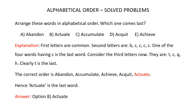When you consider the words Actuate, Accumulate, Acquit, and Achieve, you will see that AC is common. So now you have to consider the third letters: T, C, Q, and H. In the alphabet series, C comes first, then H, then Q, and finally T. So clearly T comes last. The correct order is Abandon, Accumulate, Achieve, Acquit, and Actuate. So Actuate is the last word, and the correct answer is option B, Actuate.